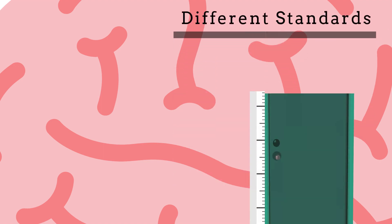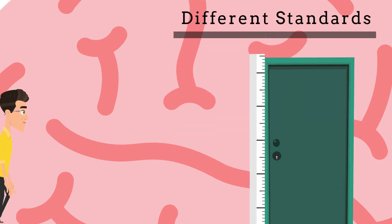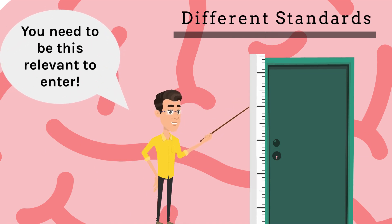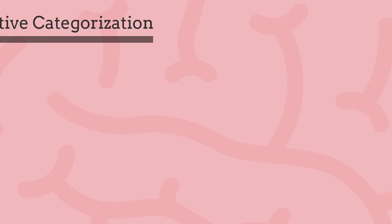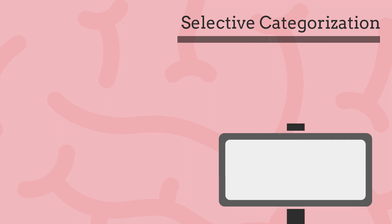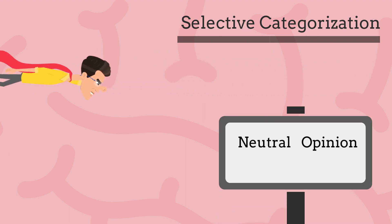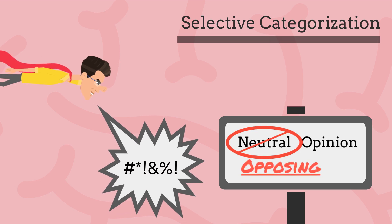The second mechanism is different standards. Everyone has different standards regarding everything, and the same applies to information. Even though recipients receive the same information, that doesn't mean they have the same opinion concerning the admissibility of that information. The third mechanism is selective categorization, which means that not only contrary information, but even neutral information is being construed as opposing by the recipient.